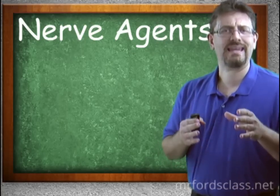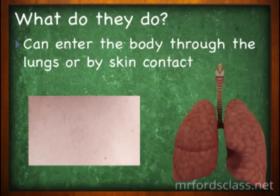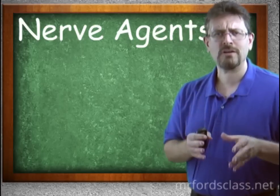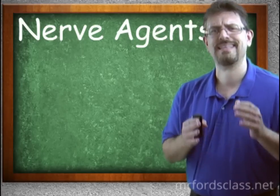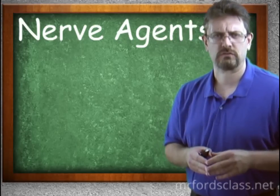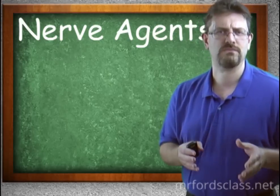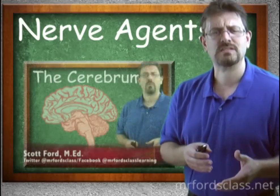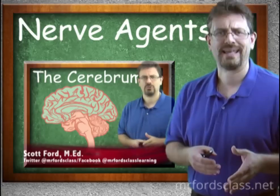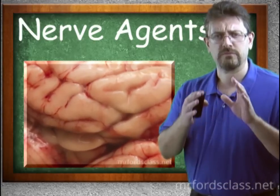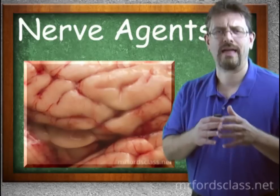These things can get into the body by the lungs — meaning you breathe them in — or by skin contact. So what do they do? Nerve agents are called nerve agents because they impact the nervous system. We're not going to get too much into the functions of the nervous system in this video; be sure to check out our anatomy and physiology videos on the nervous system. Let's keep this kind of simple.